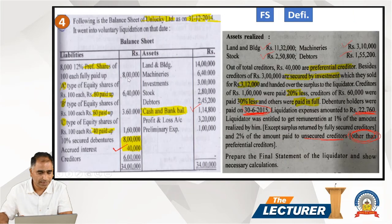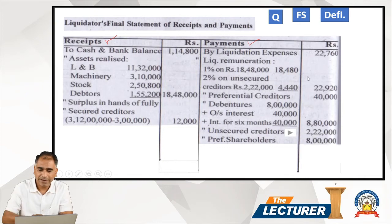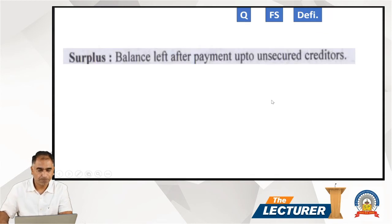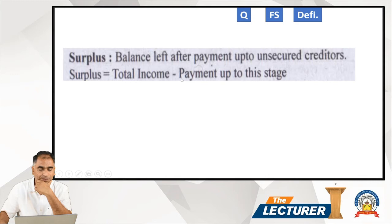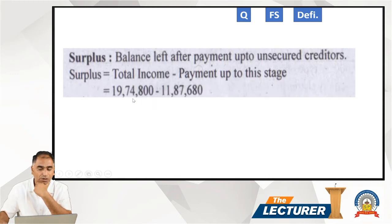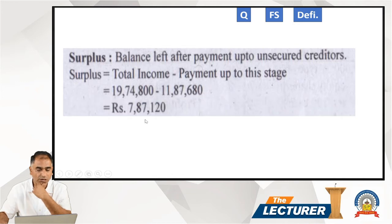Preference shareholders' amount is ₹8 lakh. Now we check whether there is a deficiency or surplus. The surplus balance left after payment up to unsecured creditors: total income ₹19,74,800 minus payments up to unsecured creditors stage gives a surplus of ₹7,87,120.